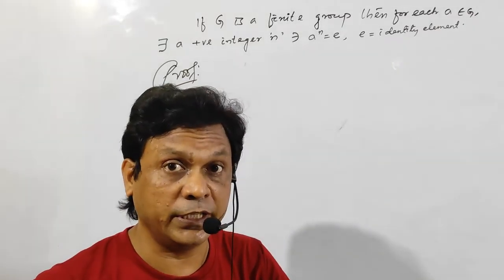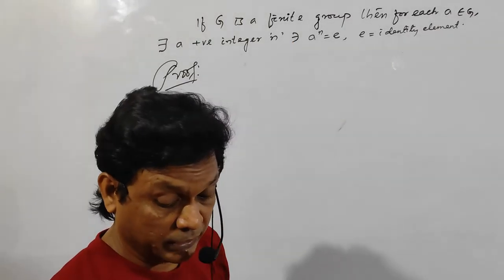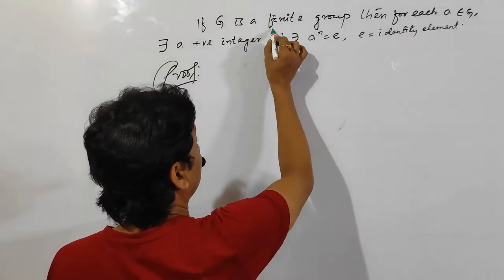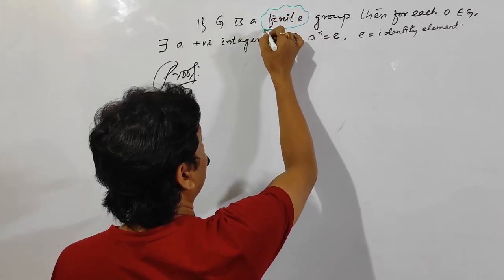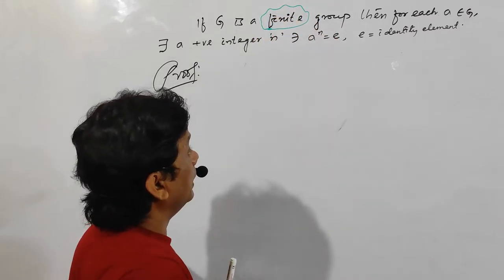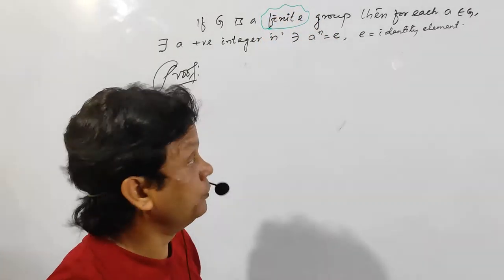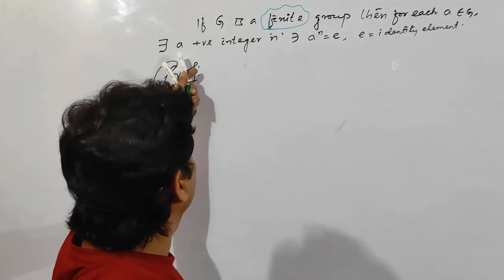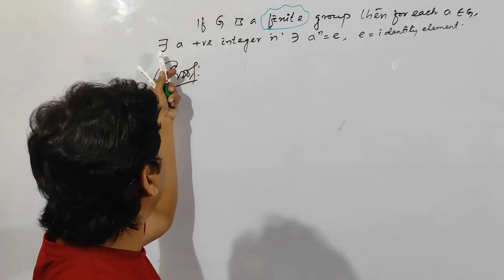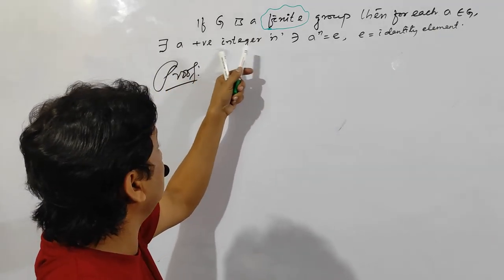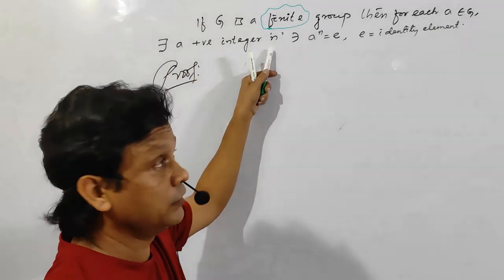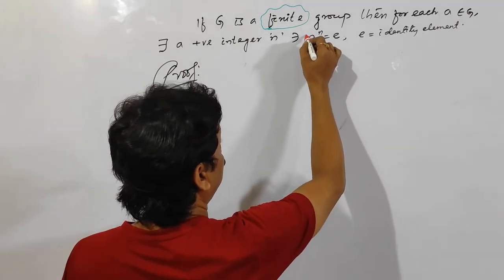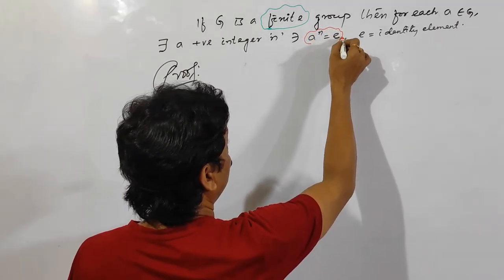Now, G is a finite group — it is already given that G is a group and it is finite. You want to prove that for each a belonging to G, there exists a positive integer n such that a to the power n equals e.